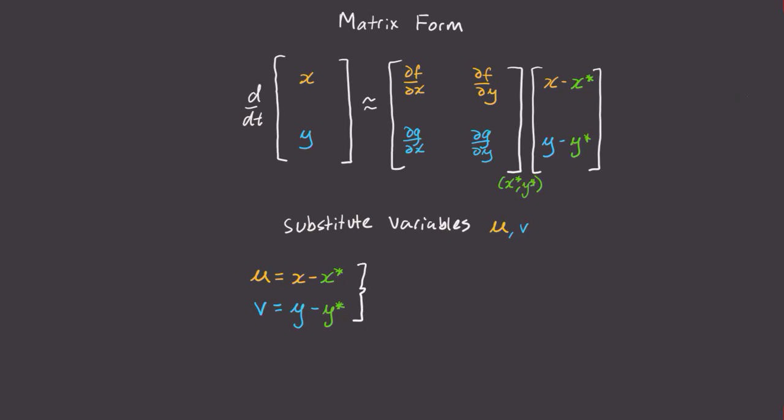I'll define u is equal to x minus x star and v is equal to y minus y star. If you think about it, u is the horizontal distance away from a fixed point, and v is the vertical distance from the fixed point. So u and v can be thought of as a coordinate system centered at the fixed point.